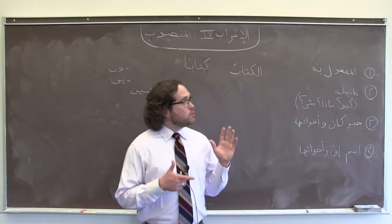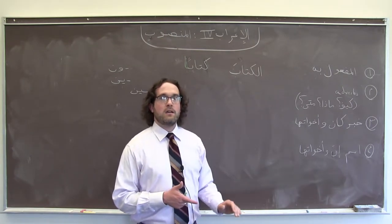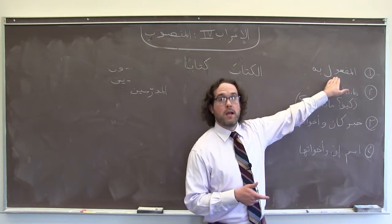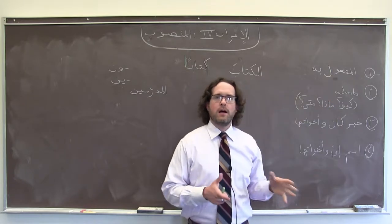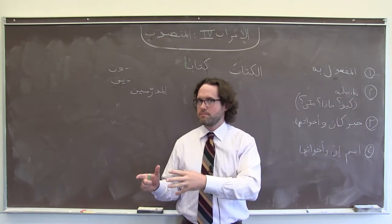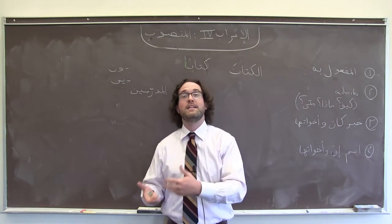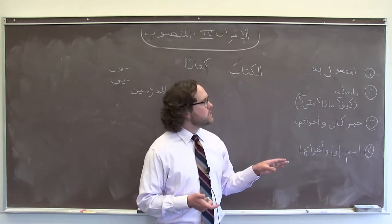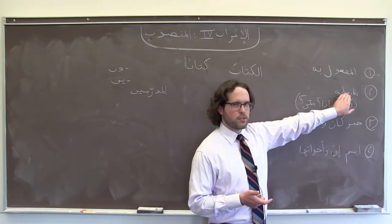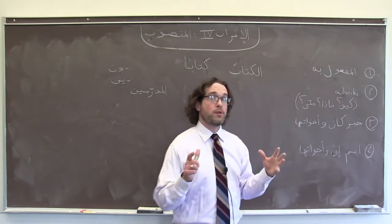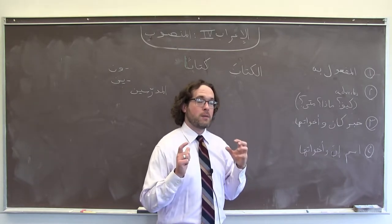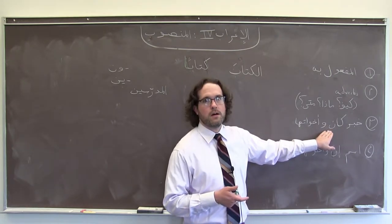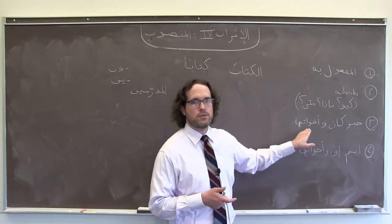When we use or see منصوب, it usually indicates a couple of things. Perhaps the most common is the direct object of a verb — المفعول به, as we say in Arabic. For example, 'I bought a book' — كتاب would need to be منصوب: كتاباً. Other really common places we see it are adverbs, and also the predicate — the خبر — of كان, or its sisters, كان وأخواتها.